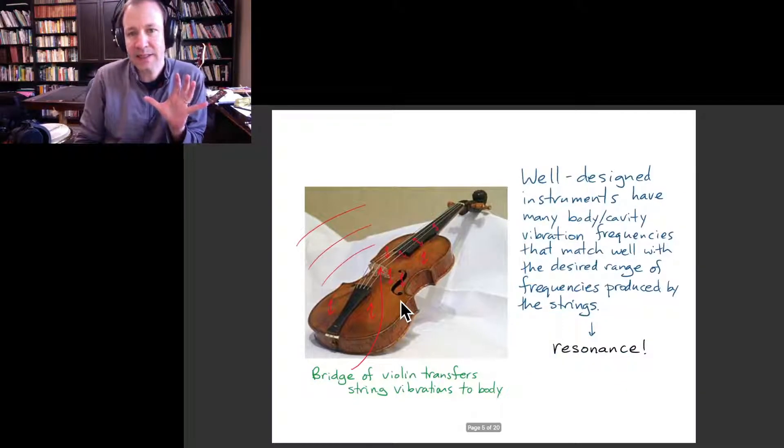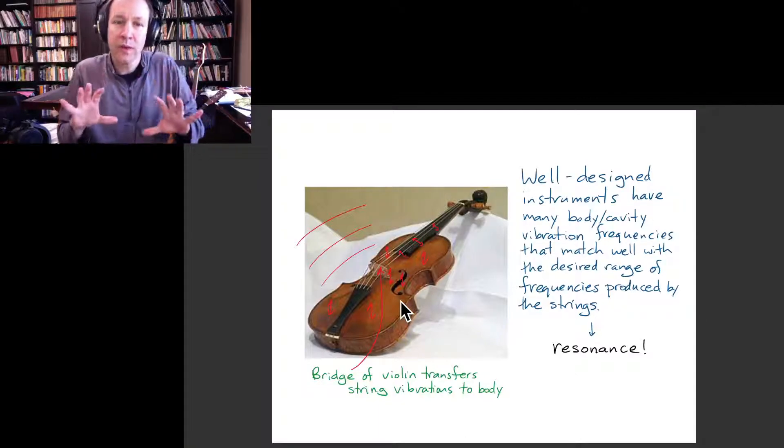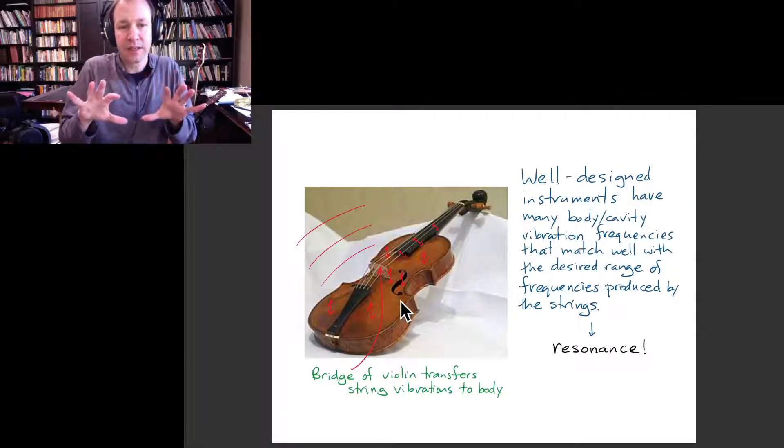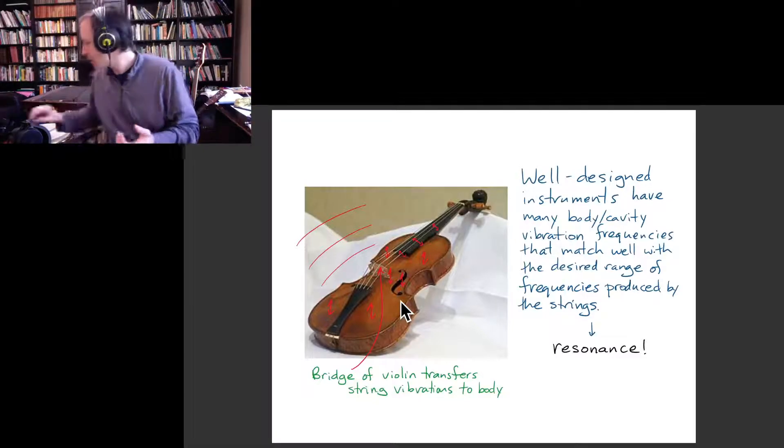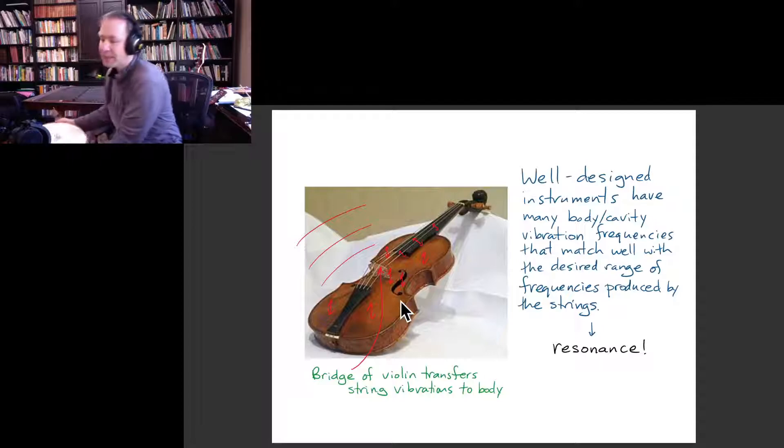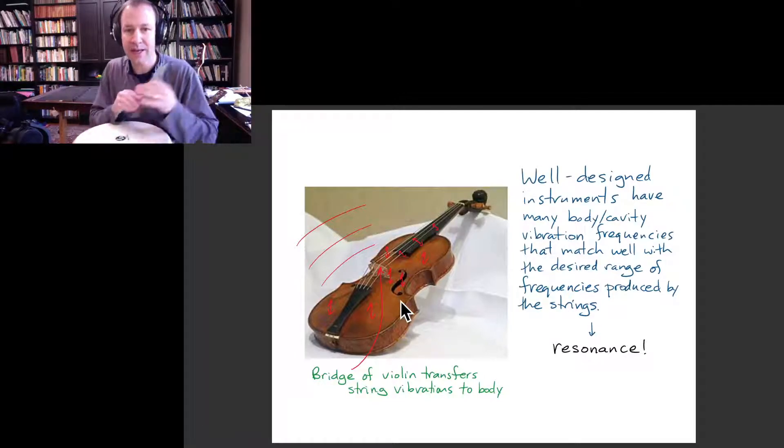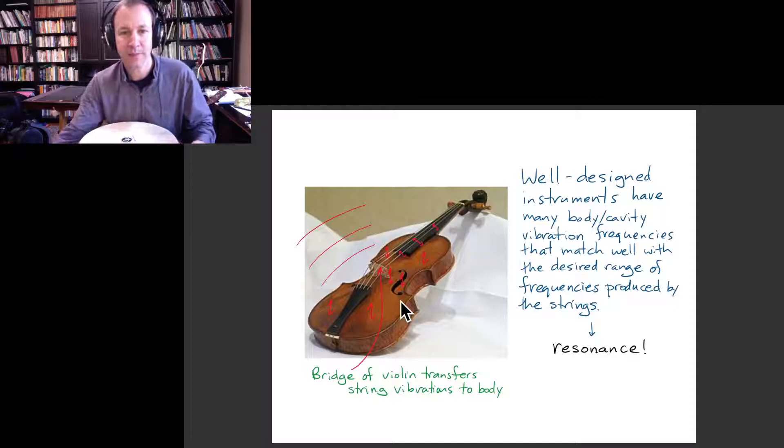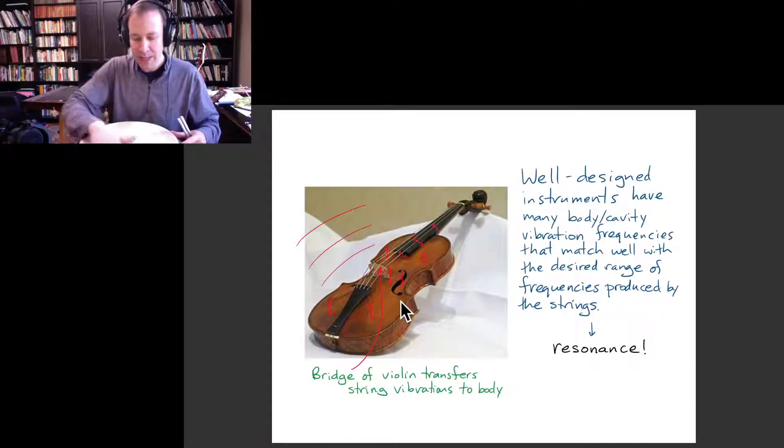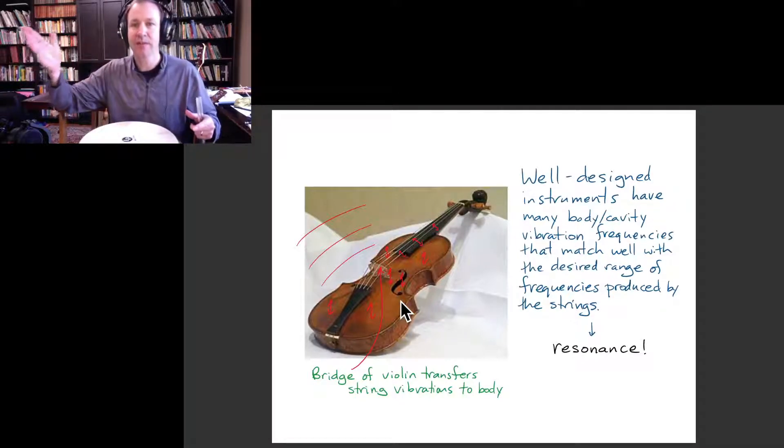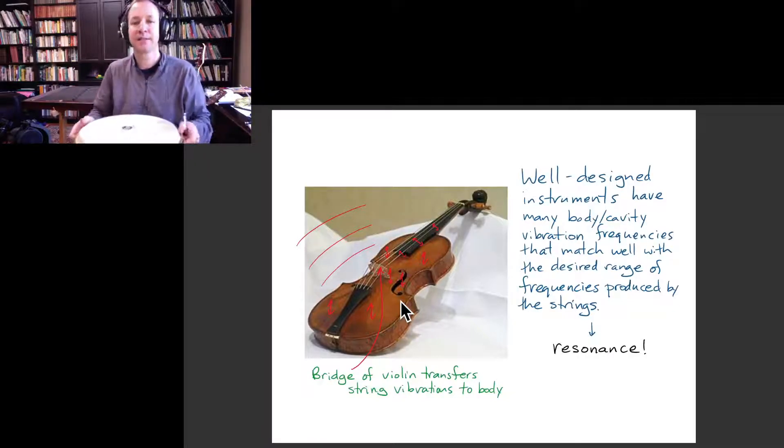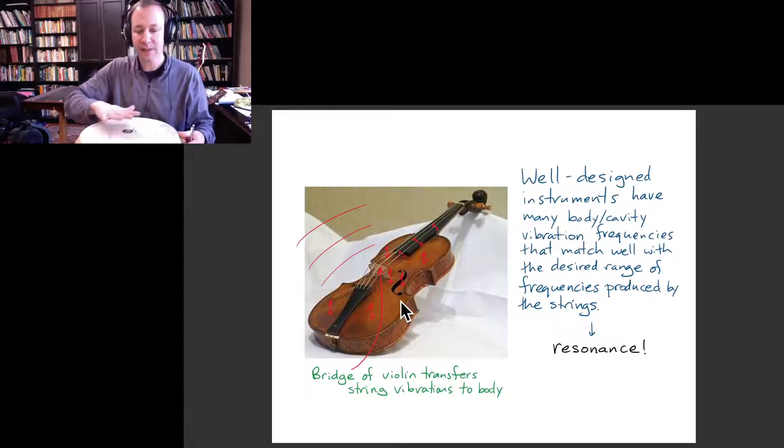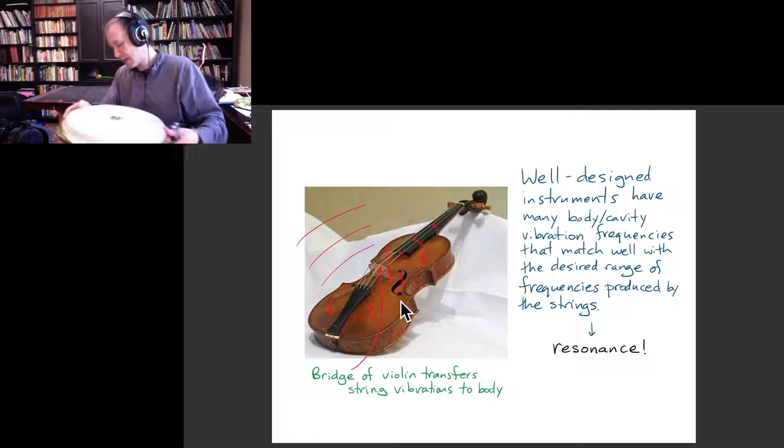And so the idea here is that what you want is your instrument to have a lot of different natural modes of vibration. So we talked about how something like a drum head, something complicated like that, is something that has a lot of different natural vibration frequencies. So like the stretched string had this series of harmonics, there's a set of natural frequencies for something like a drum head or a piece of wood.